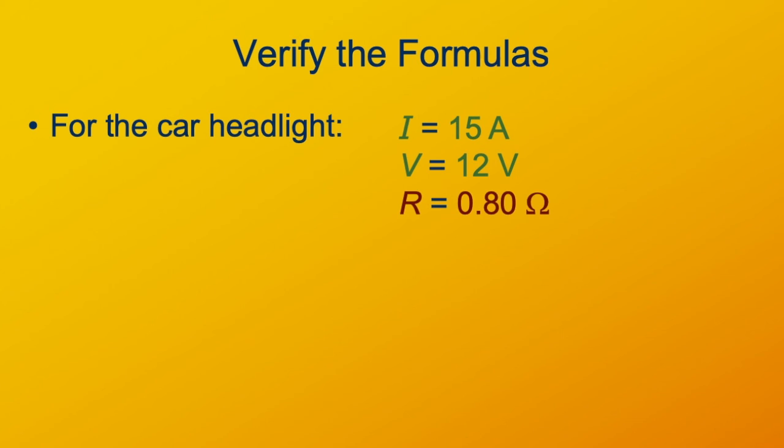So, given that the current was 15 amps, the voltage was 12 volts, and then we use that information to find out the resistance is 0.8, or 4 fifths Ohm. So, verify that the VI works. You can, we already did that. 12 times 15 is 180.